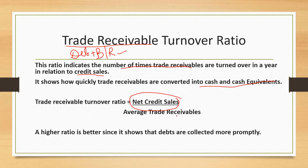Now, what is average trade receivable? I will be explaining that in the sum we are going to do after this. A higher ratio shows that your debt collections are very prompt — that means you are collecting your debts very quickly. So let us do a sum related to this that will give you a clear idea.